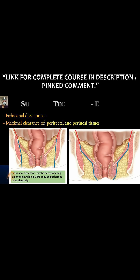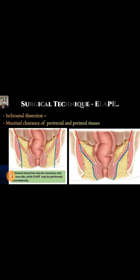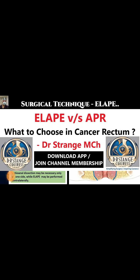Ischioanal dissection we have already covered before. It is one indication for ELAPE when the tumor is perforating or fistulizing, or there is abscess formation into the ischioanal fossa.